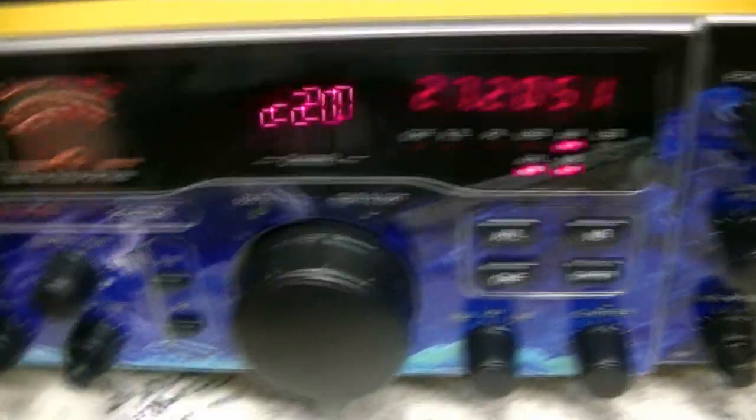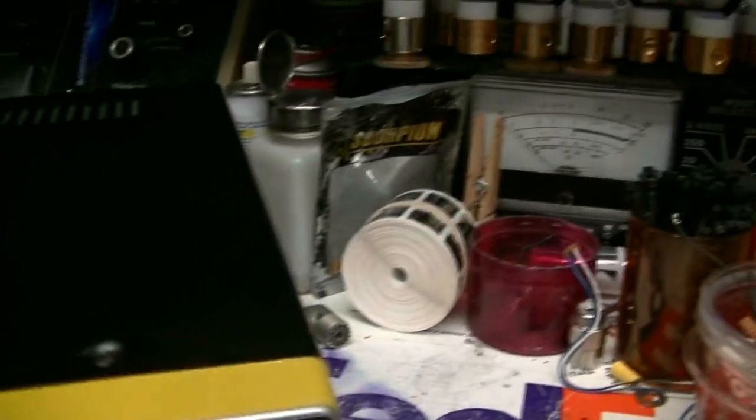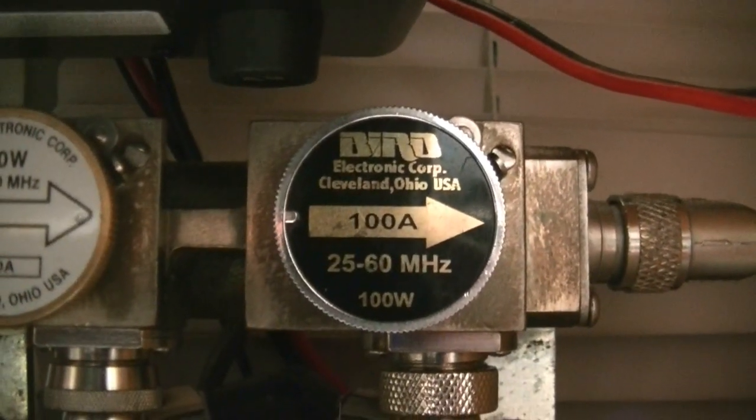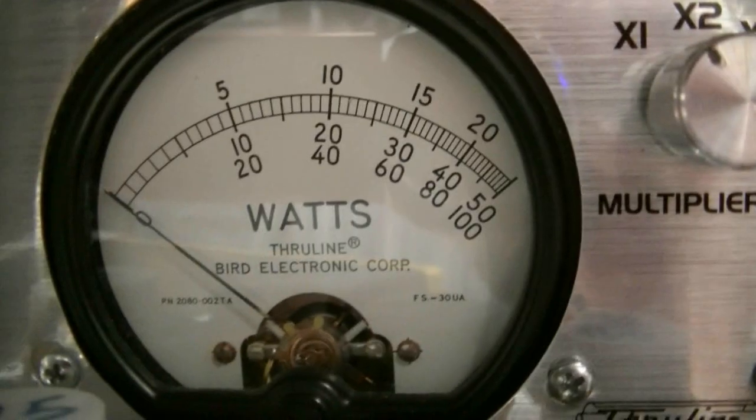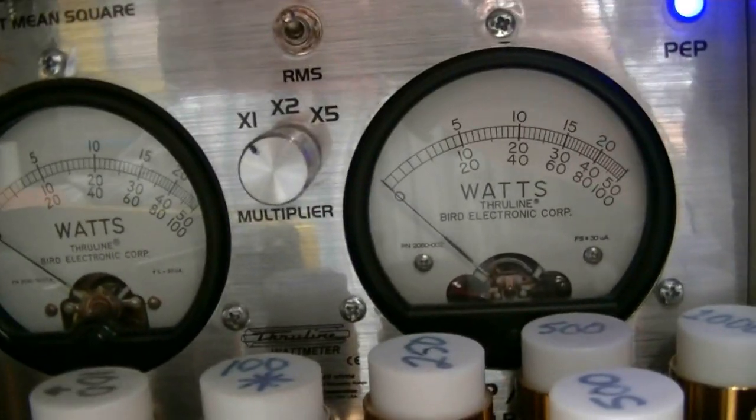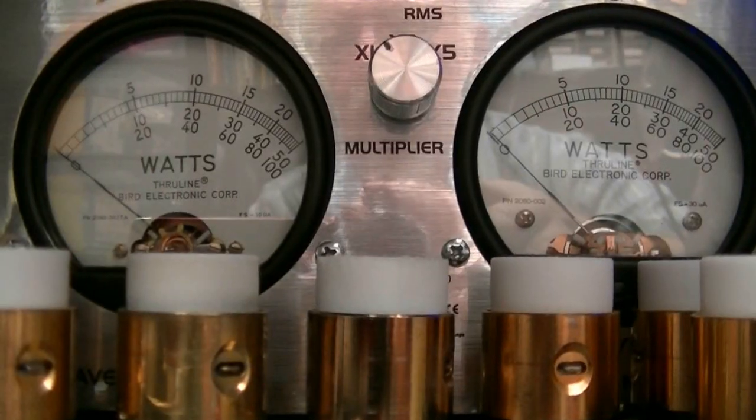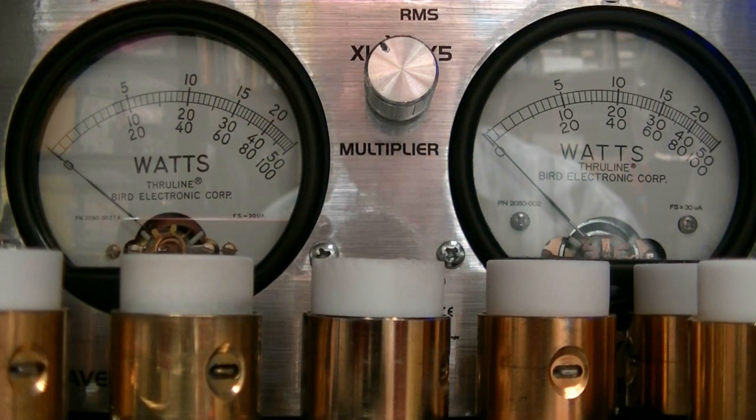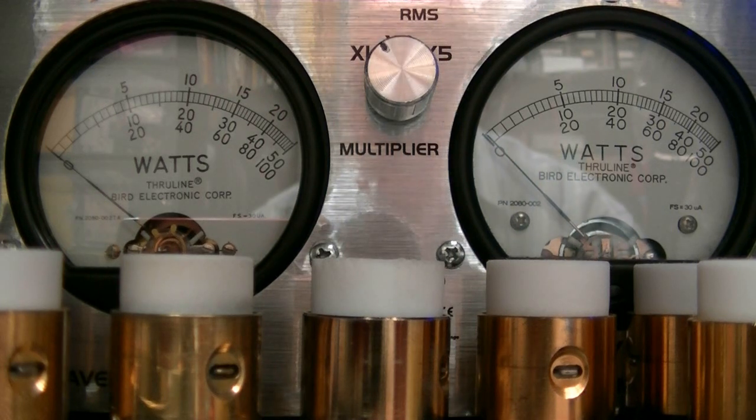Let's do some power checks first. I got a 50 watter on that side and a 100 on that side, so I want to be reading on the center scale on the RMS side, and we will be reading on the bottom scale on the peaks side. Multiplier's on times one. Now I'm on AM channel 20.